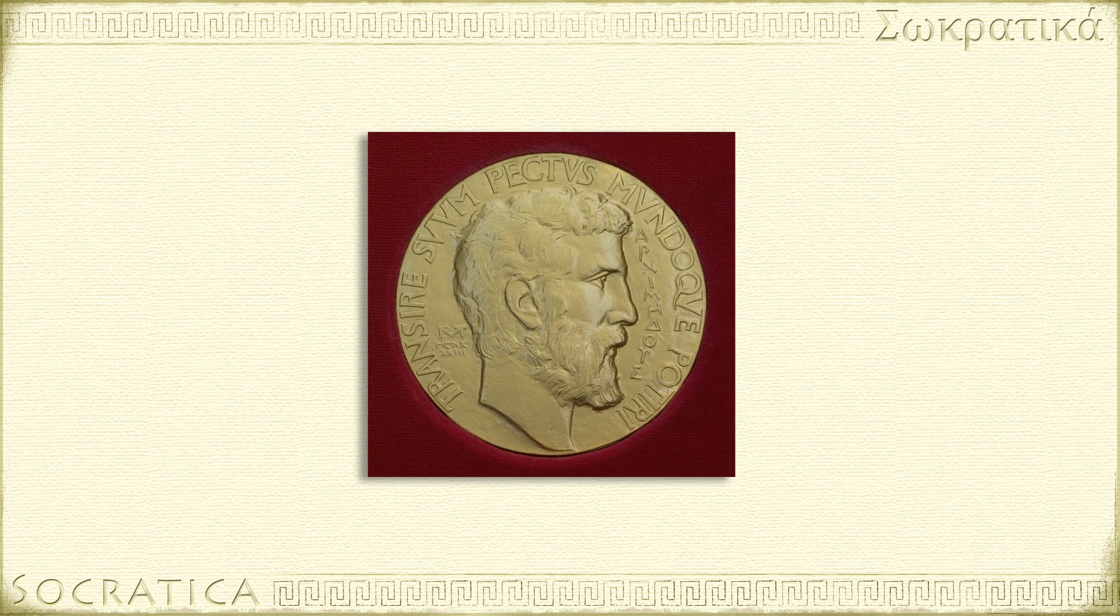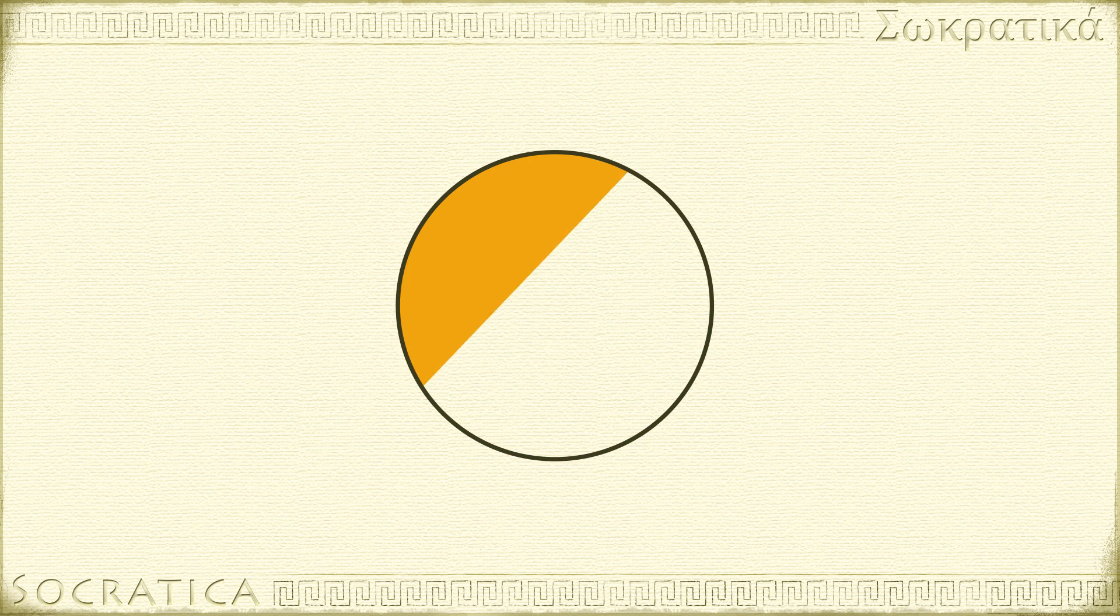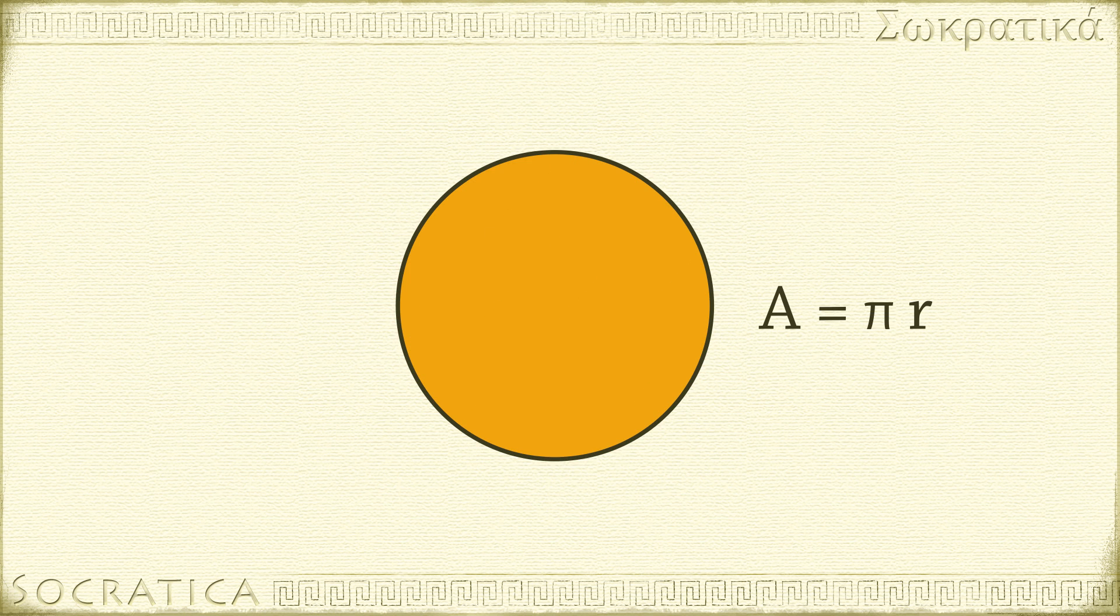The great Greek scholar Archimedes discovered a formula for computing the area of a circle. Area equals pi times the radius squared.